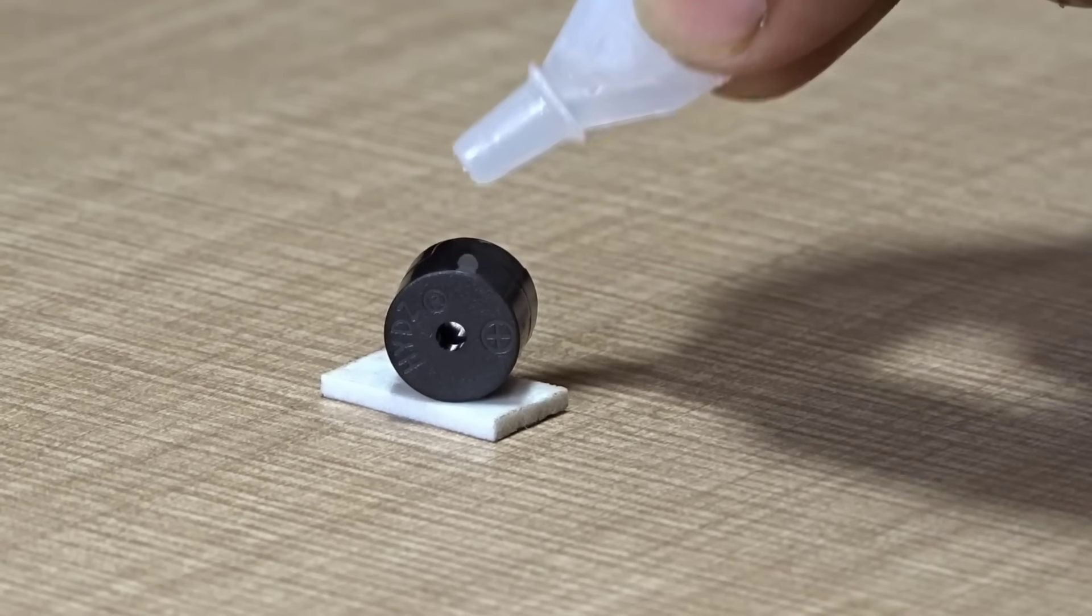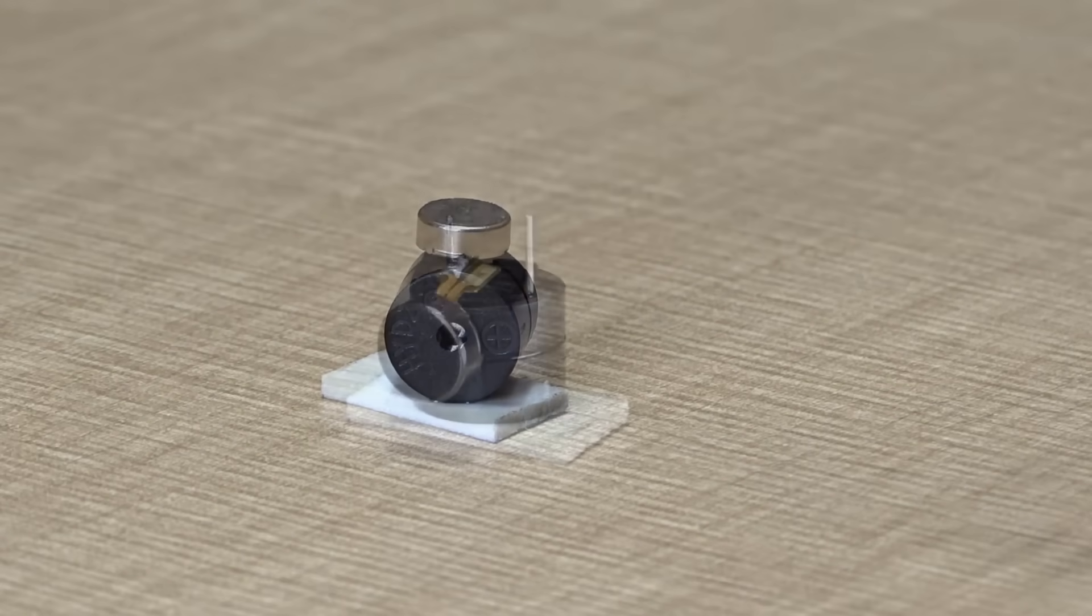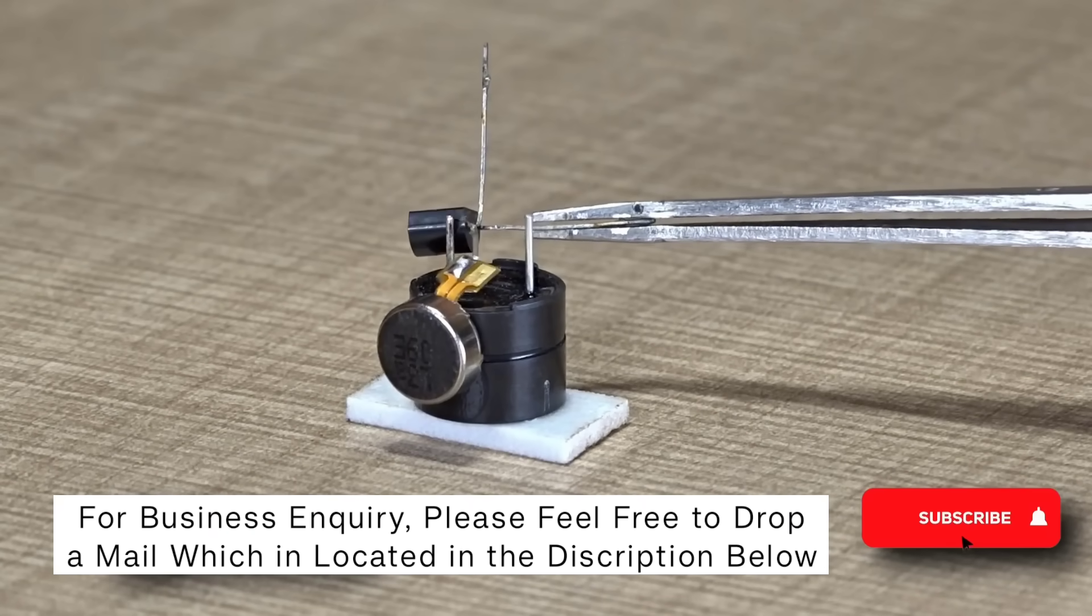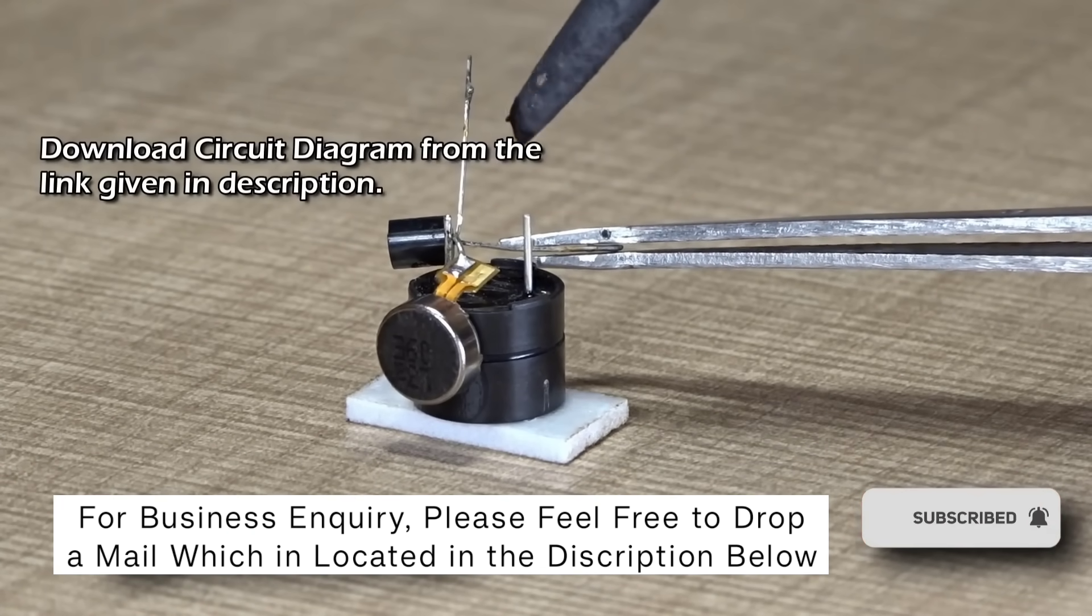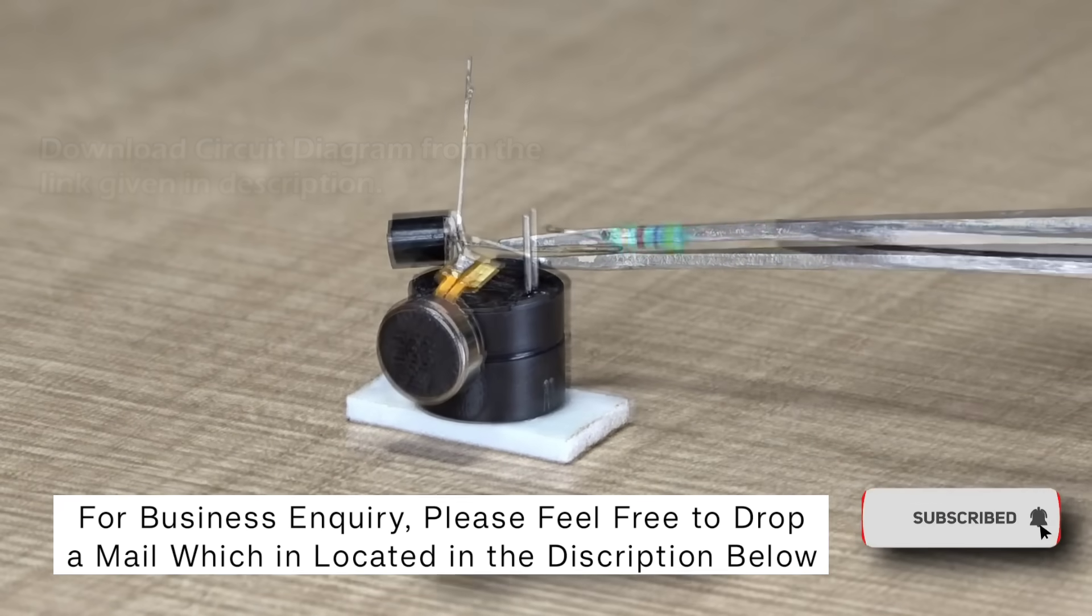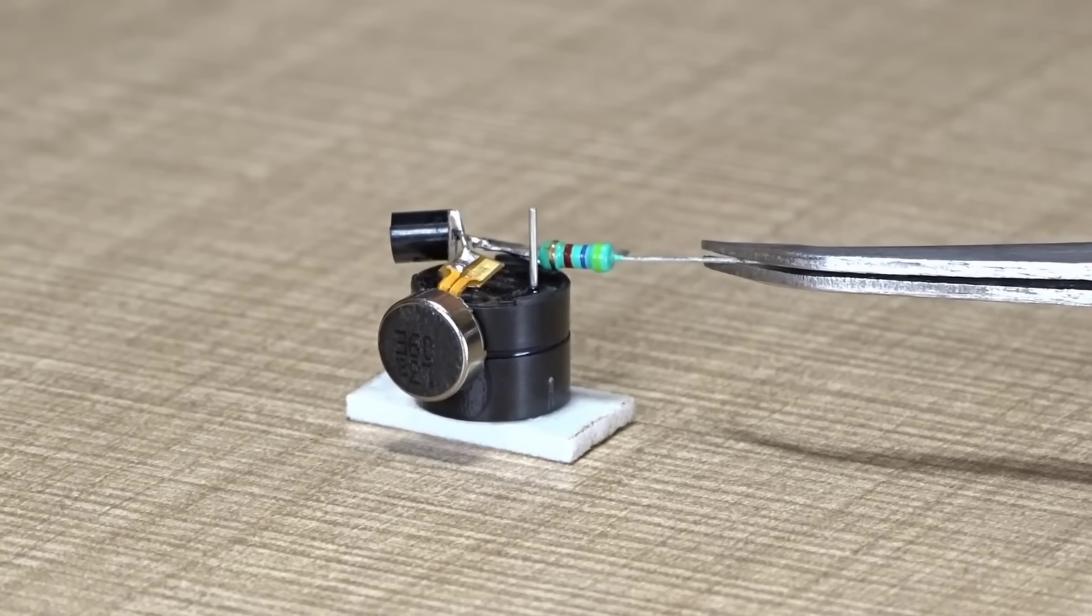we'll be using Feviquick or any reliable instant adhesive. At this point, we'll be attaching the vibration sensor to the buzzer module. Apply a small amount of glue at the point where the sensor and buzzer meet, and carefully press them together. Give it a few moments to set properly so the components don't shift during operation.